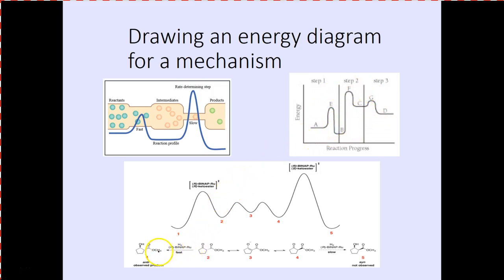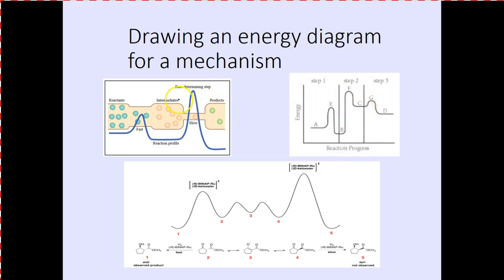Here's an organic reaction example with multiple steps. The slow step is the one requiring the most activation energy. In the top right-hand corner example — step one, two, or three — step two is the slow step because it has the greatest activation energy. The rate-determining step has the greatest activation energy; it requires the most energy to proceed.